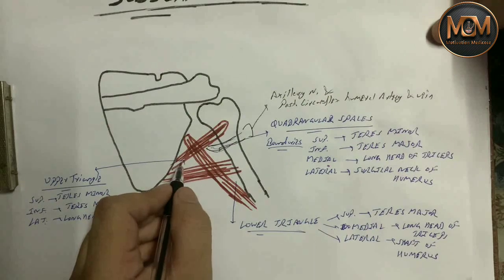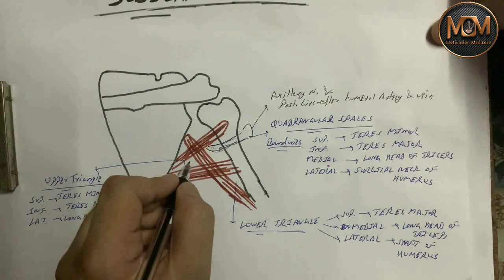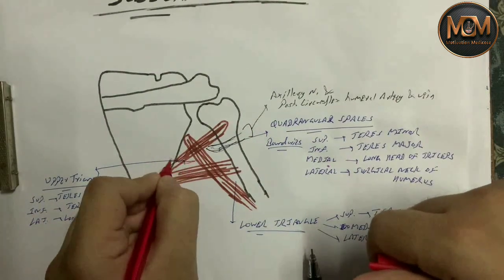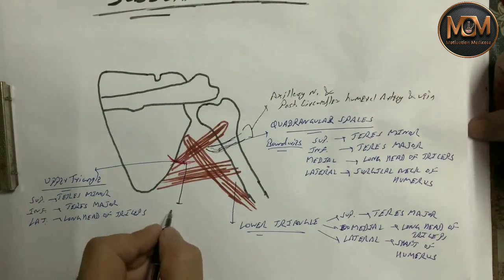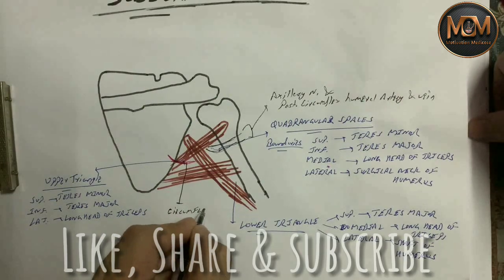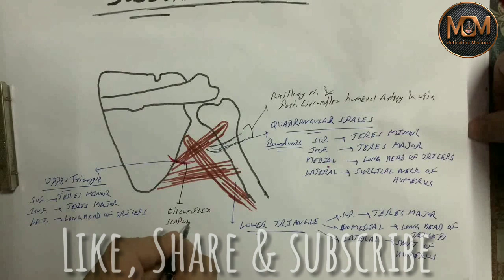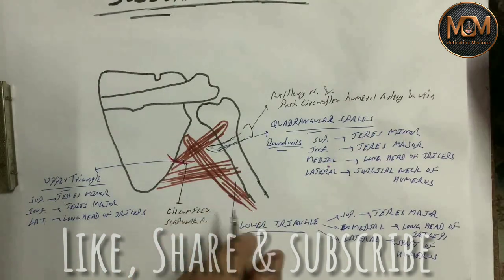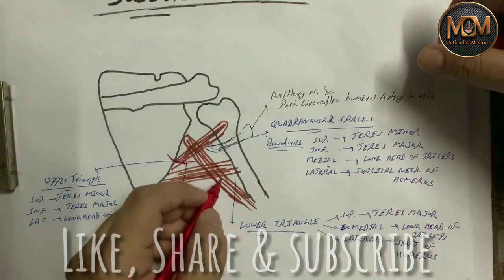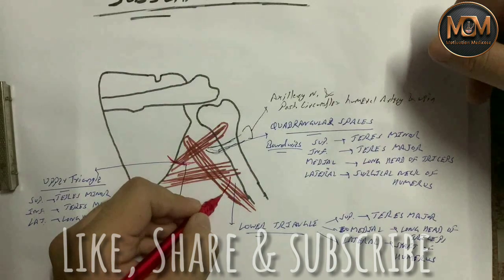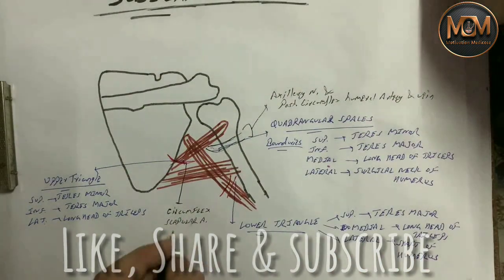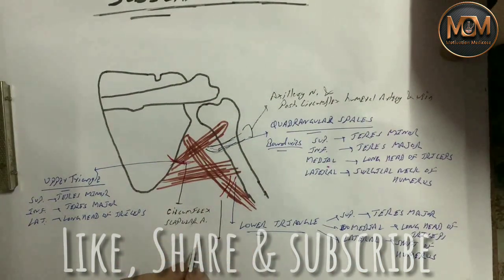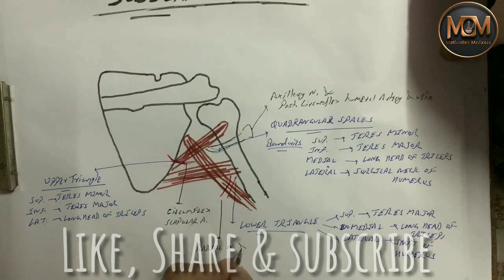In the upper triangle, one artery is present — the circumflex scapular artery. In the lower triangle, two structures are present: the radial nerve and the profunda brachii artery.